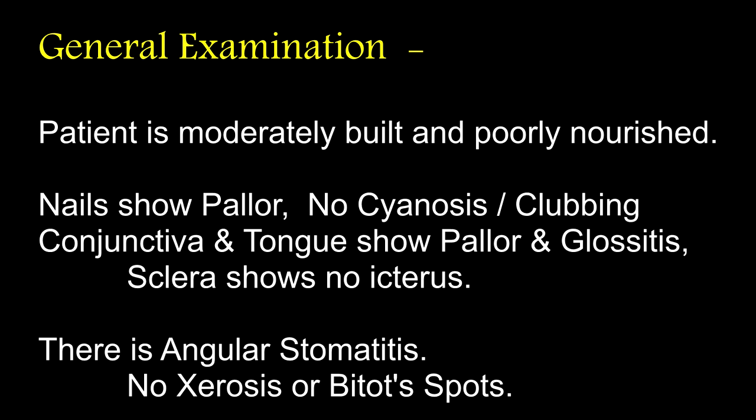Which vitamin deficiency causes angular stomatitis? Vitamins B2 and B6, that is riboflavin and pyridoxine. And glossitis: Vitamins B2, B6 and B12. Is it because of cirrhosis? No, it is because of nutritional deficiency. Cirrhosis or chronic liver failure will cause deficiency of fat-soluble vitamins, that is Vitamins A and D. Why? Due to deficiency of the carrier proteins which are essential for the transport of these fat-soluble vitamins.